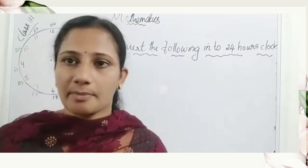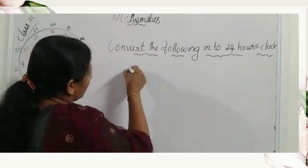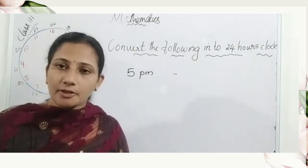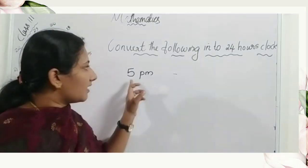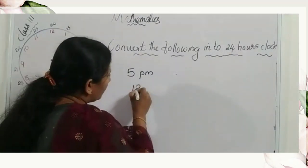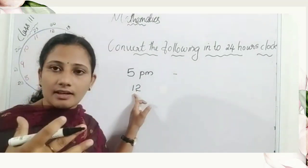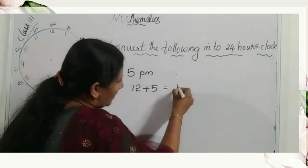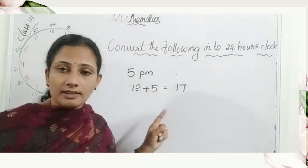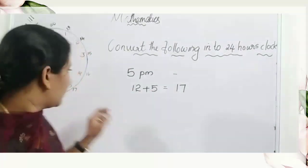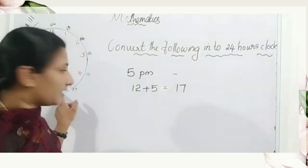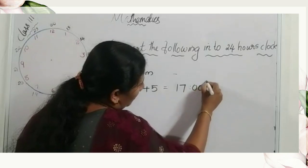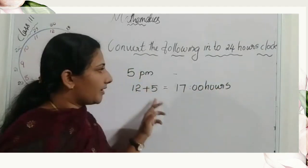In the twelve hour clock system we write four twenty p.m., and in the twenty-four hour clock system that is sixteen twenty hours. Let us look at some examples. How do we convert five p.m. into the twenty-four hour clock system? We know p.m. starts at twelve, so twelve plus five equals seventeen. Five p.m. is seventeen hours.